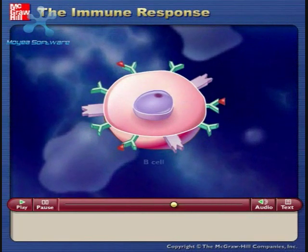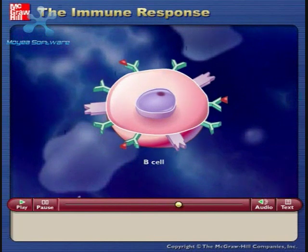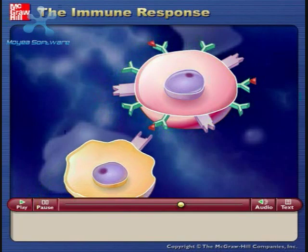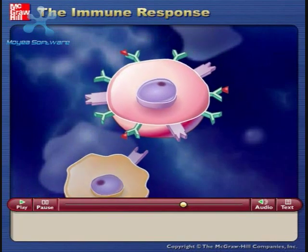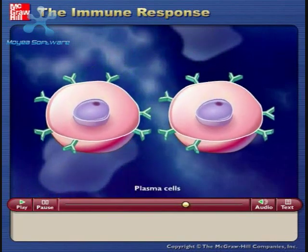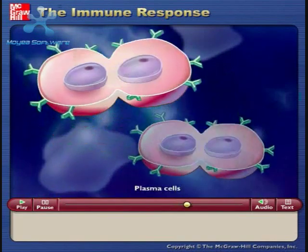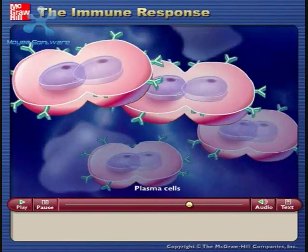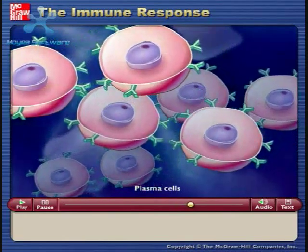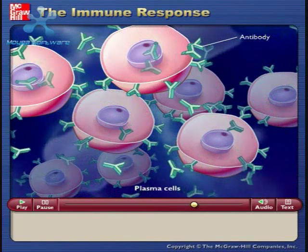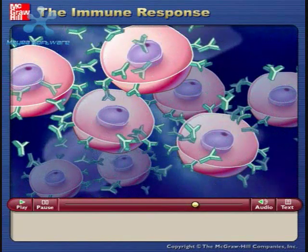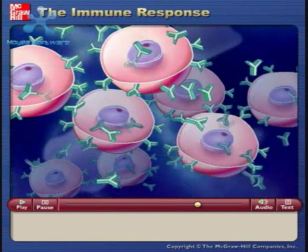B cells also come in millions of different types, each able to recognize a particular antigen. When B cells become activated by T helper cells, they differentiate into plasma cells. These plasma cells become antibody-producing factories, flooding the bloodstream with antibodies that can bind to the antigen involved in this infection.